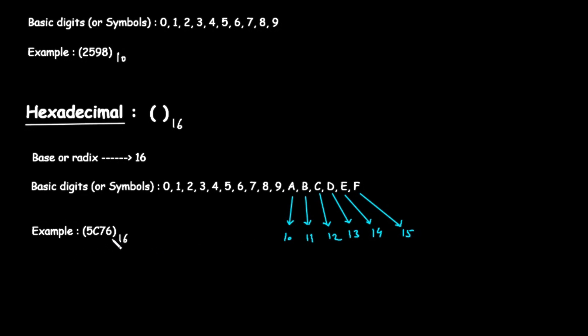Let's look at the example, the number 5C76 in base 16. Here, the 5, 7, and 6 are familiar digits. The C is one of the special hexadecimal symbols, and it represents the decimal value of 12. Hexadecimal is widely used because it's a very compact way to represent long binary numbers, making it easier for programmers to read and write computer code.